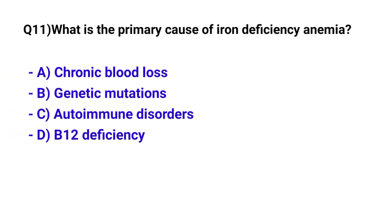Question number 11. What is the primary cause of iron deficiency anemia? The correct option is A. Chronic blood loss.